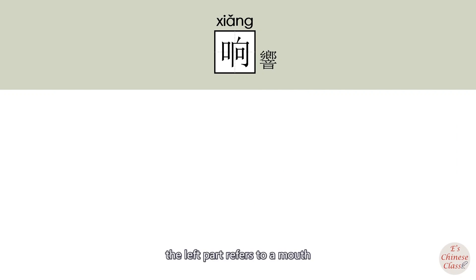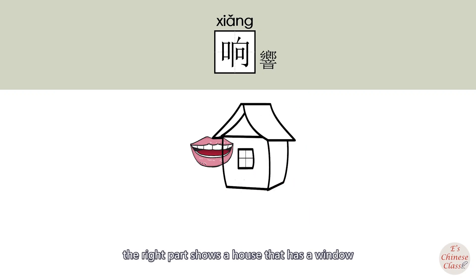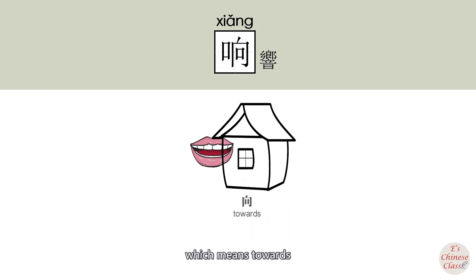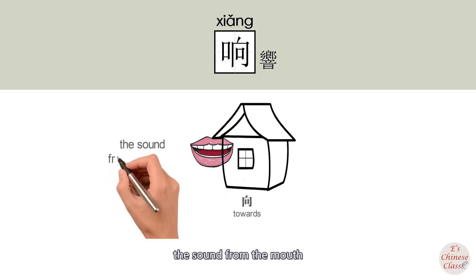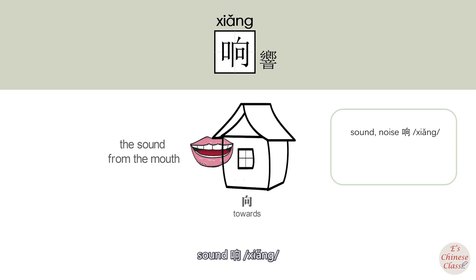响. The left part refers to a mouth. The right part shows a house that has a window towards the north. This is the character 象, which means towards. This character indicates sound from the mouth. So the original meaning of 响 is sound. The extended meaning is echo.